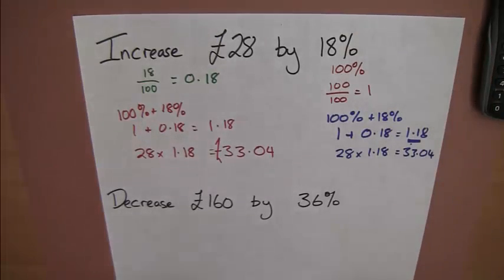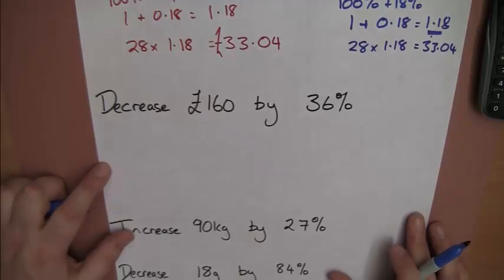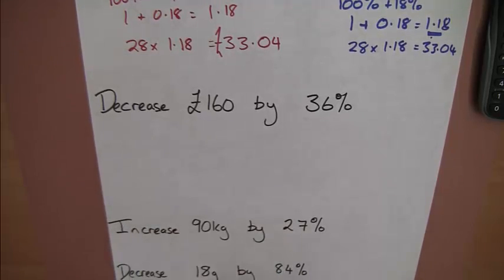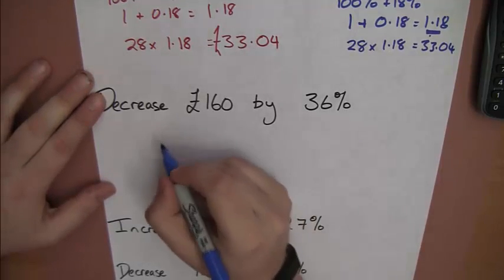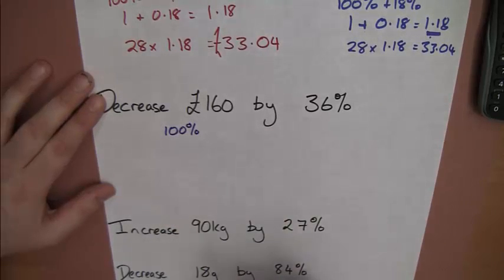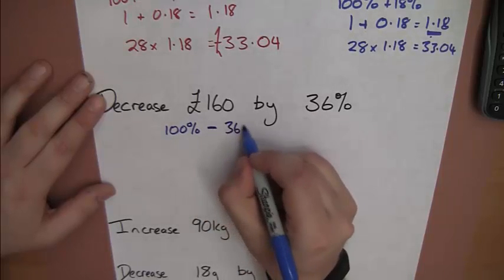Now, let's look at this in a slightly different question, and hopefully it will allow us to access it. We've got a decrease of 160 pounds by 36%. So, we're starting with the original amount, which is our 100%. We're decreasing, so that's taking away the amount. Taking away 36%.